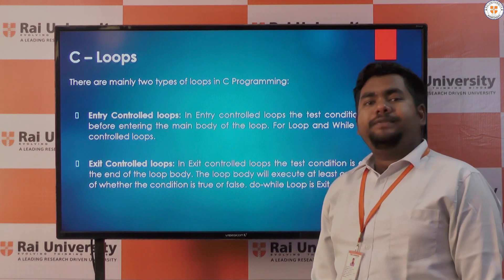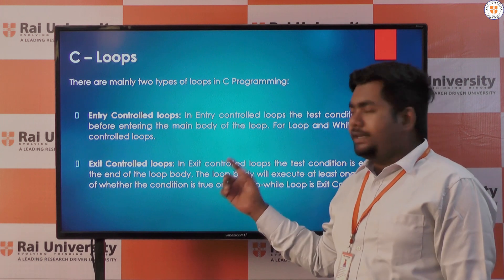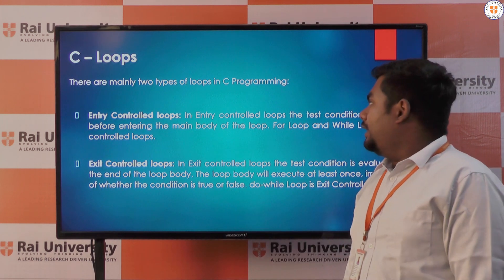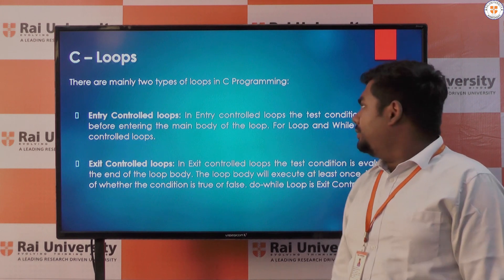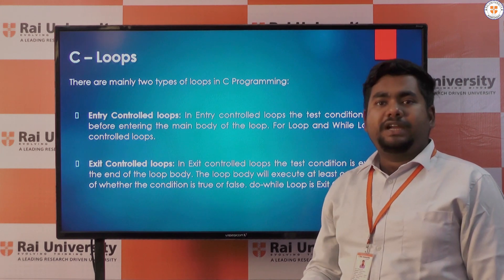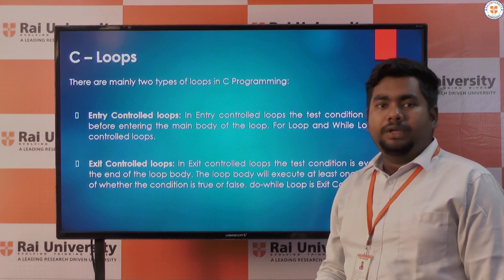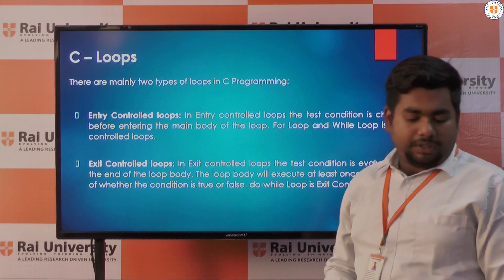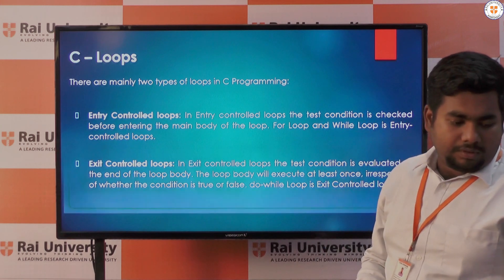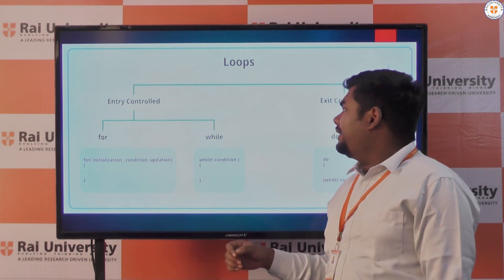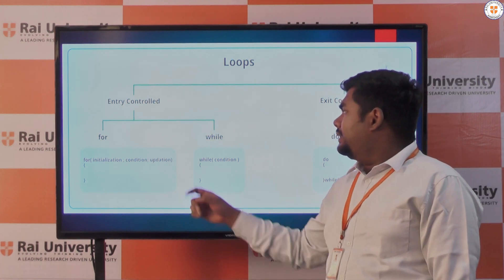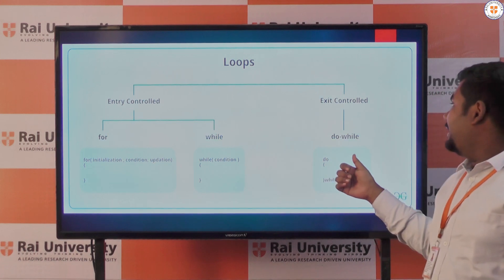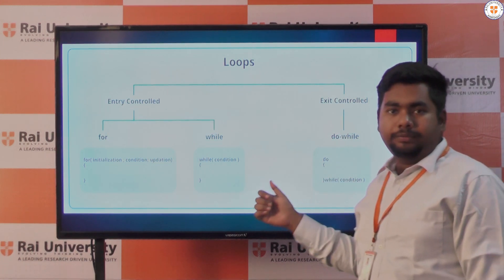There are two types of loop in C programming: one is entry control loop and the other is exit control loop. In entry control loop we check our condition at the starting of the loop, and in exit control loop we check our condition at the end of the loop. There are two entry control loops — the for loop and the while loop — and there is only one exit control loop, that is the do-while loop.